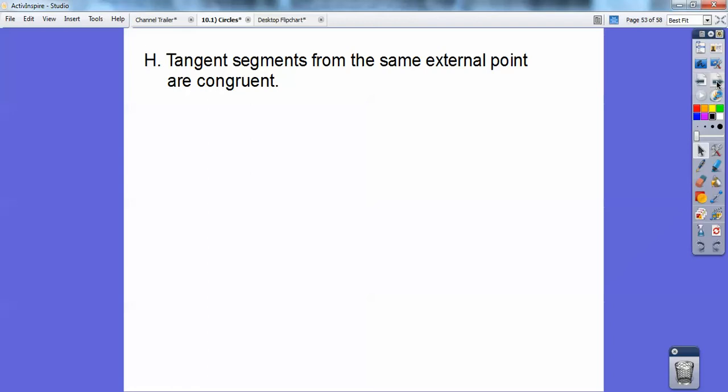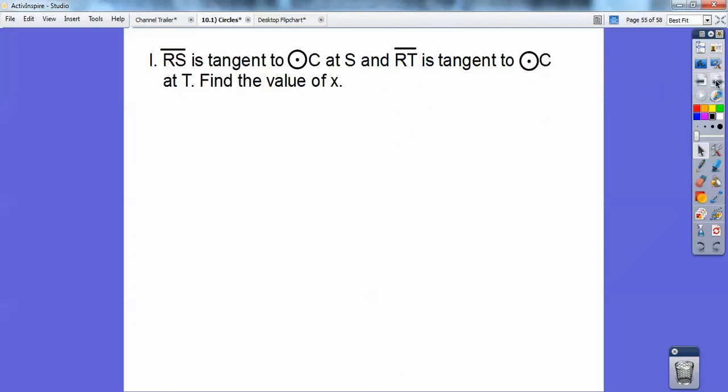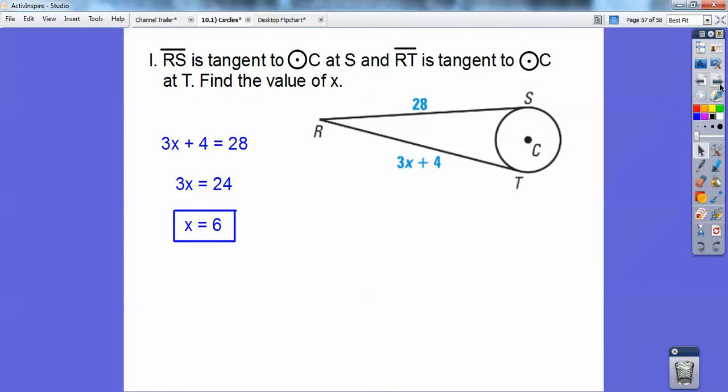Tangent segments from the same external point are congruent. So if these are the same external points, so this segment is congruent to this segment as long as they're tangent from the same outside piece. So RS is tangent to circle C at S, and RT is tangent to circle C at T. Find the value of X. It's easy enough. This side equals this side. So you go ahead and set 3X plus 4 equals 28, and you get X equals 6.